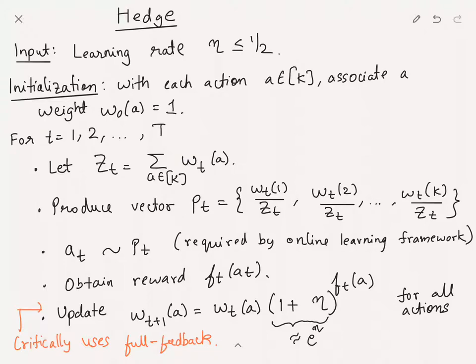Another way to interpret one plus eta is to note that (1 + eta) is approximately e^eta if you use the Taylor series expansion and eta is small enough. Usually this is stated where the weight is wt(a) times e^(eta * ft(a)). For historical reasons I've stated it in the form of one plus eta, but you might as well use e to the power eta times ft(a). That is essentially what we will do in the analysis.